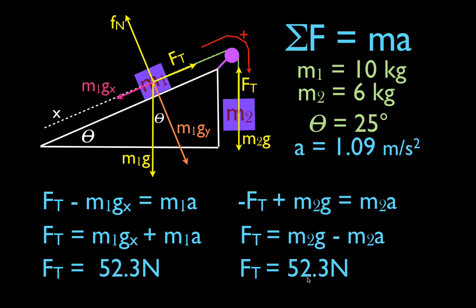We got the acceleration, we know when it's positive or negative, we calculated the tension, and we got the same tension from both objects — so we're confident in the right answer. You just have to follow the steps: draw the forces in, get the components for M1g, sum up the forces, watch out for negative and positive signs, and then calculate the tension. Thank you for watching — subscribe, give a thumbs up, and see you in the next video.